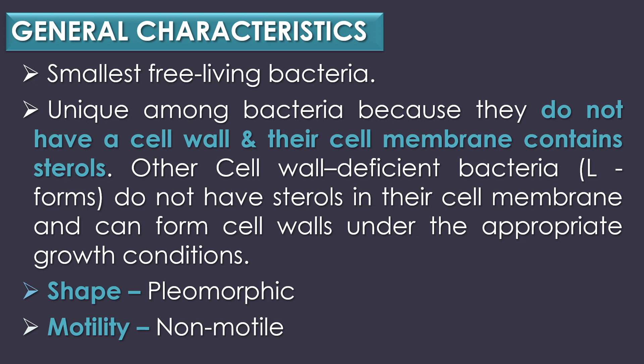First, general characteristics. Mycoplasma pneumoniae are the smallest free-living bacteria. They are unique among bacteria because they do not have a cell wall and their cell membrane contains sterols. In contrast, other cell wall deficient bacteria, which are called as L-forms, do not have sterols in their cell membrane and can form cell walls under the appropriate growth conditions.